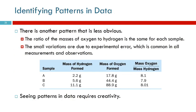There's another pattern that's less obvious. So here are those masses of the elements again. If we look at ratios of the masses, we take the mass of oxygen divided by the mass of hydrogen. It gives us a ratio of 8.1 for that sample, 7.9 for this sample, 8.01 for that sample.